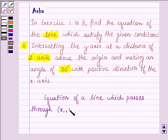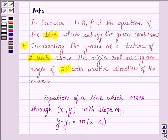And let the slope of the line be m. Then the equation of line is given by y - y1 equals m times (x - x1) where (x, y) is a general point on the line.